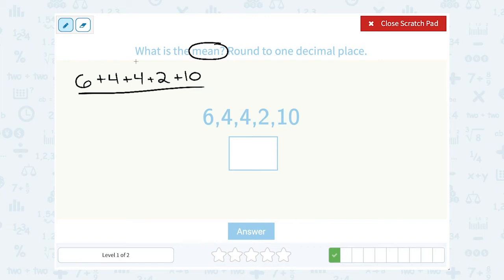And there's 1, 2, 3, 4, 5 numbers, so I'm going to divide that by 5. 6 plus 4 plus 4 plus 2 plus 10 - that's going to give me 26.